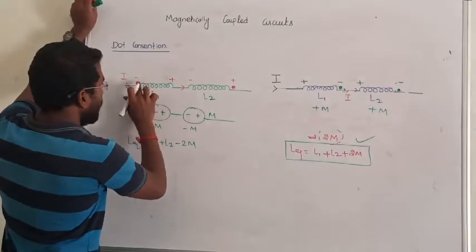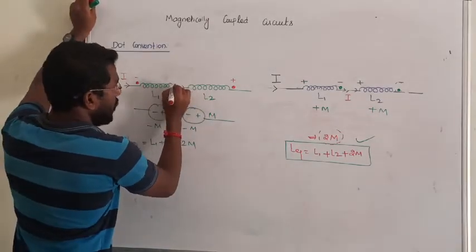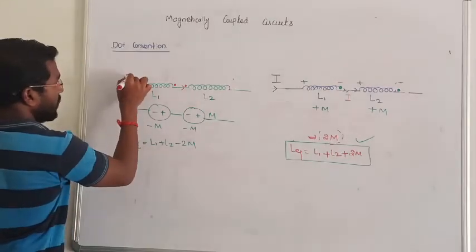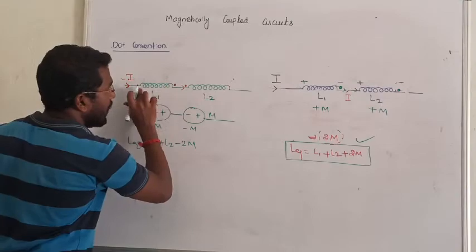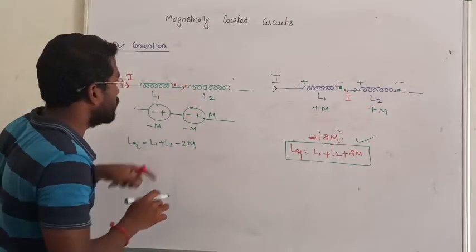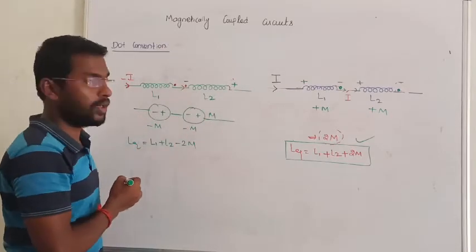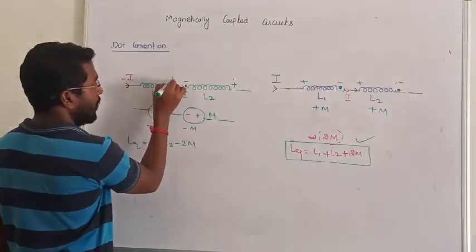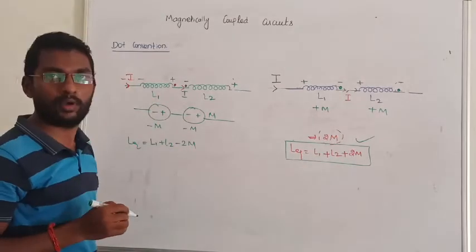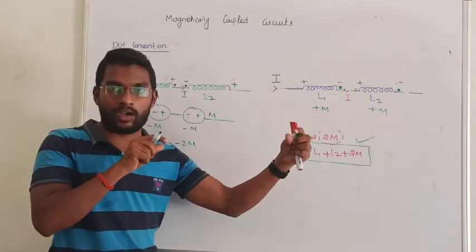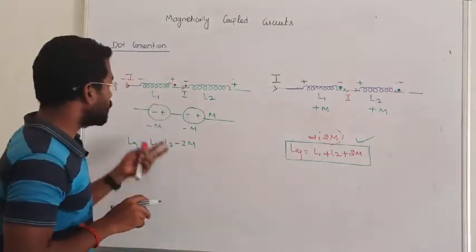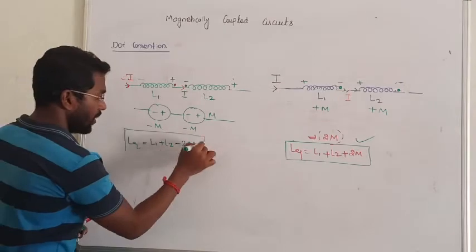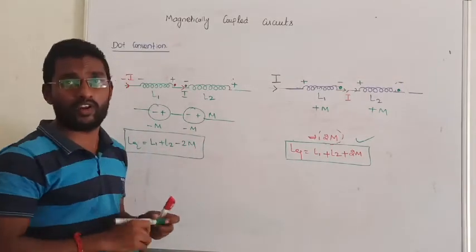In the opposite case with two dots: if both dot terminals have current entering, the equation gives plus 2M. If two dot terminals have current leaving and the other pair entering, we get minus 2M. That is all about the dot convention for series-connected coils.